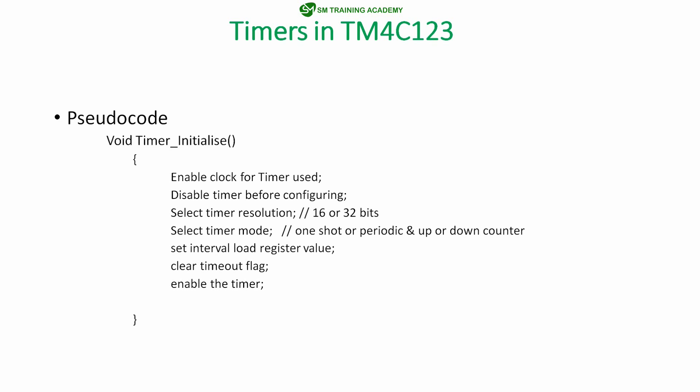Once the timer counter has started, we wait for the timer interrupt to occur. We use a separate timer interrupt subroutine function for all the actions we want to perform in our program using the timer. We will discuss this in detail in the next video, where we will configure the timer for producing accurate time delays. In this video, I hope you learned about the variants of timers available in the TM4C123 microcontroller and how to configure a particular timer.